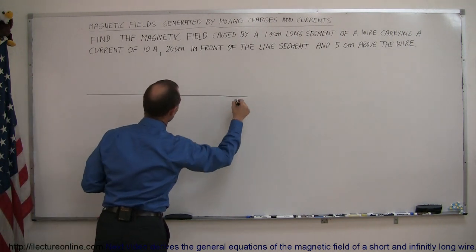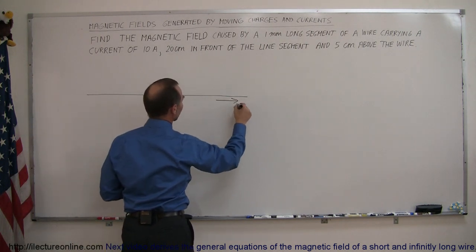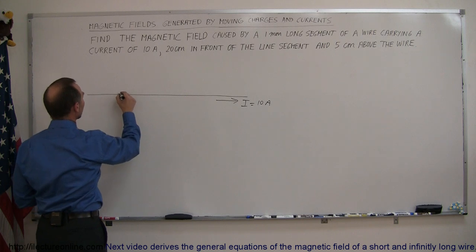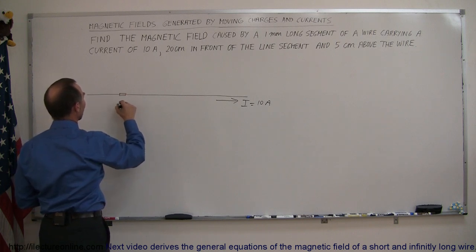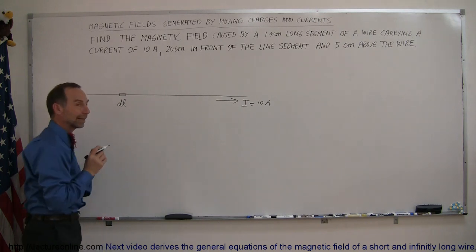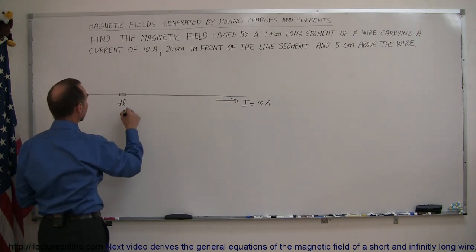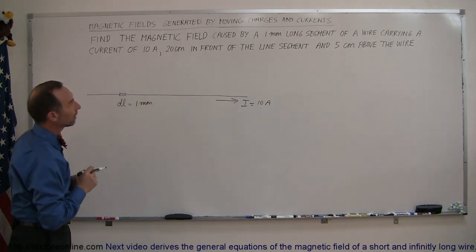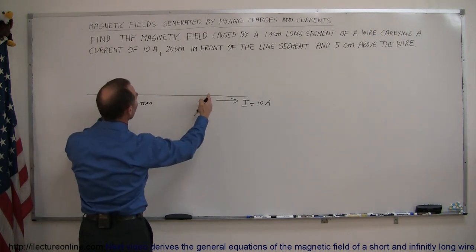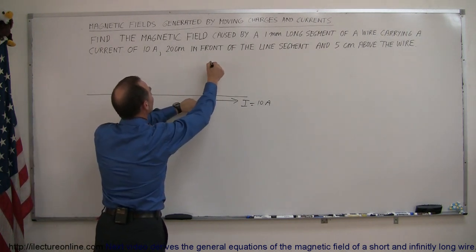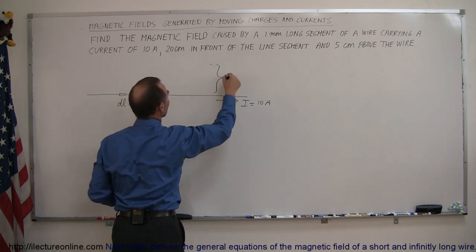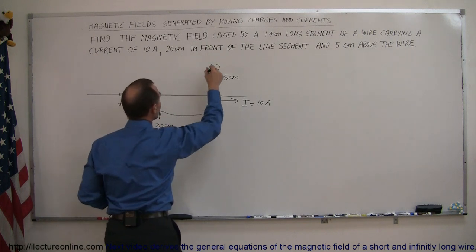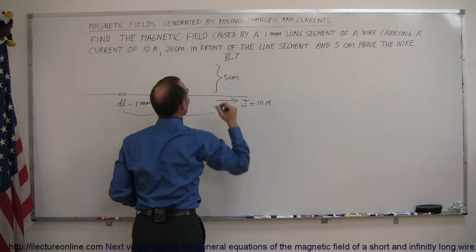Here we have a current-carrying wire. The current is moving from left to right — I equals 10 amps as given. We consider a small little segment on that wire with length DL, and DL is equal to 1 millimeter long. We want to find the magnetic field at a position 20 centimeters in front and 5 centimeters above the wire. So this distance is 5 centimeters and this distance is 20 centimeters. What is the magnetic field at that location?